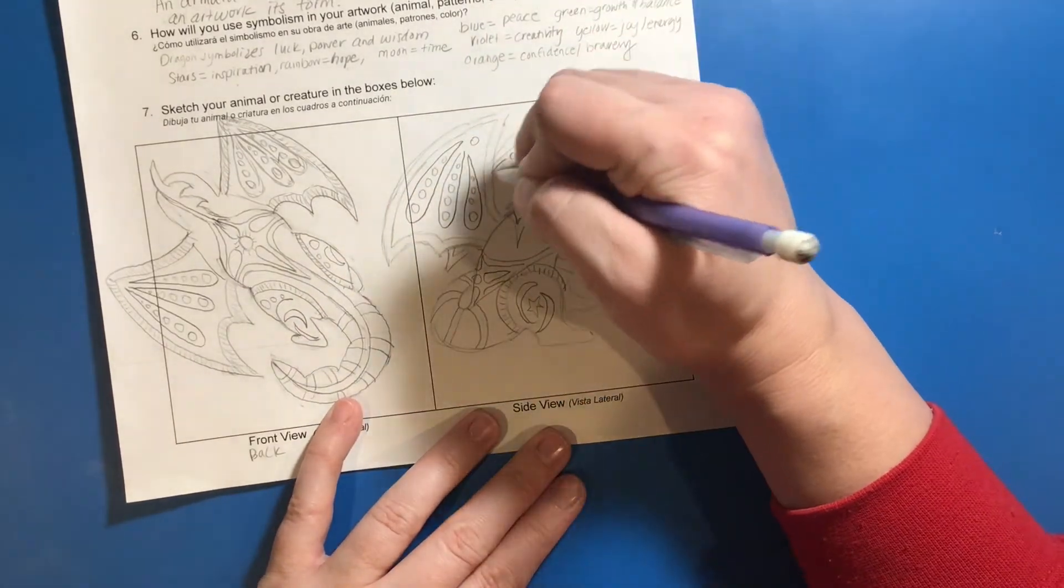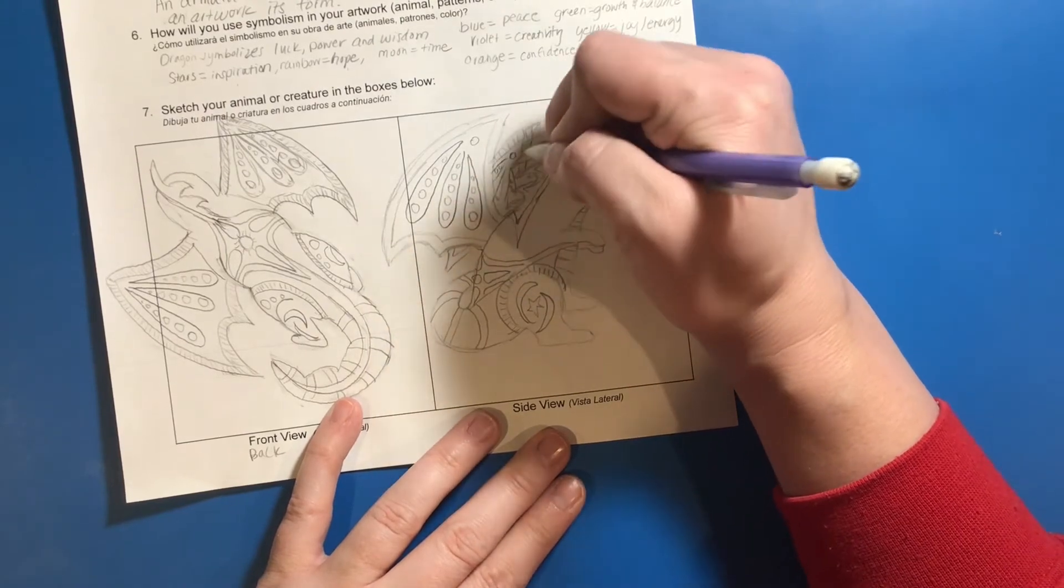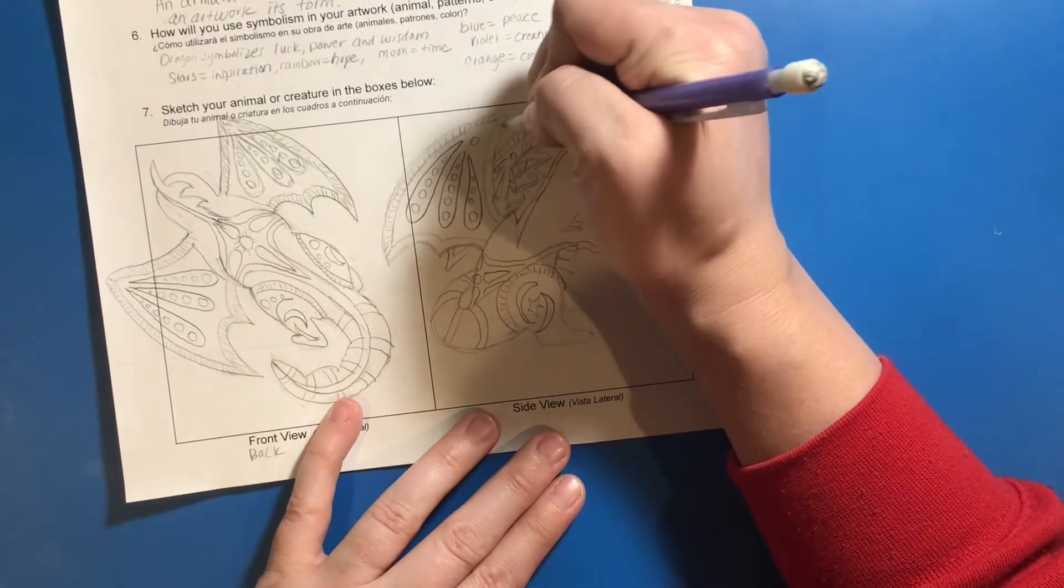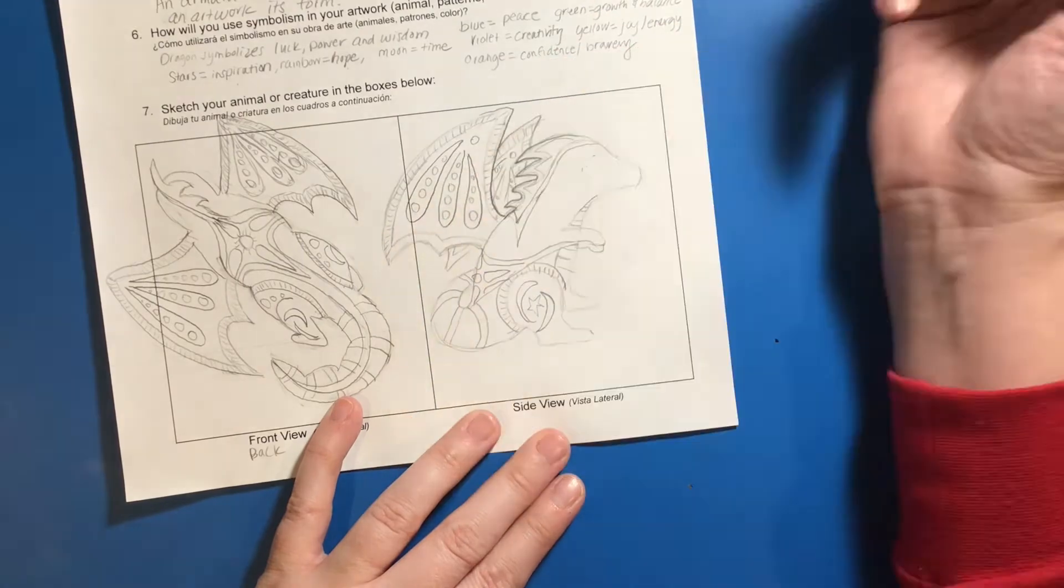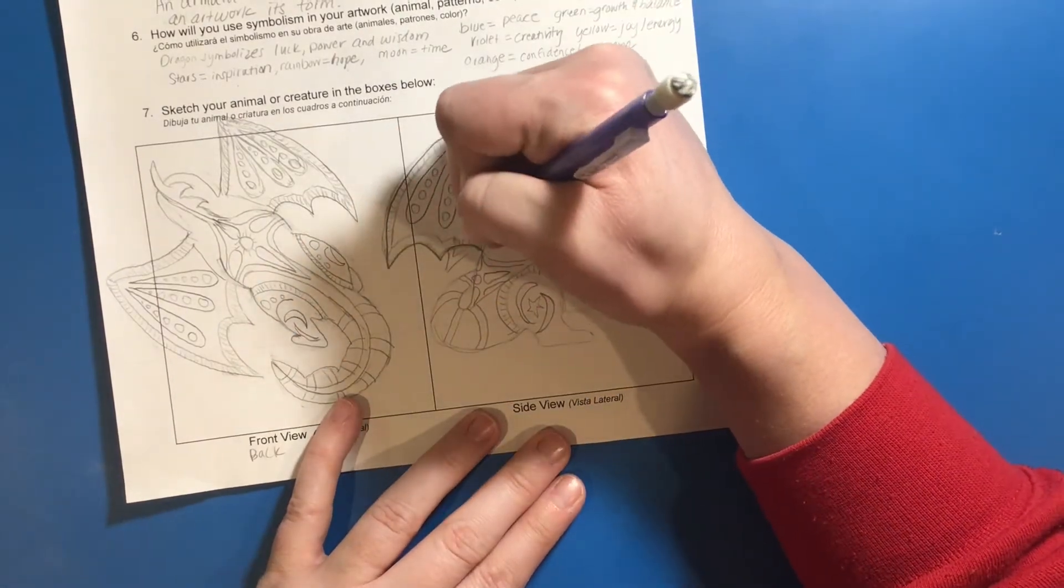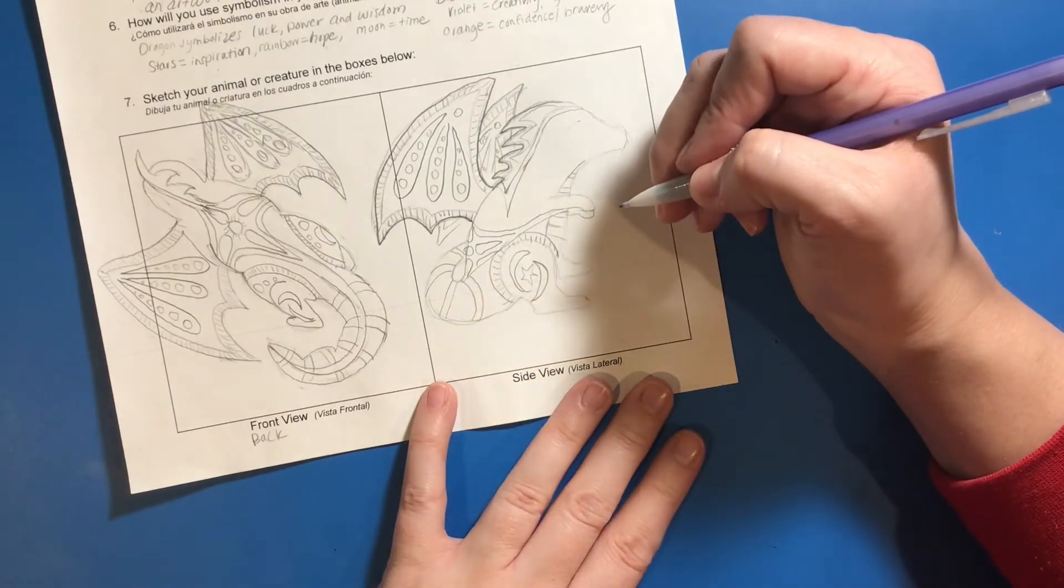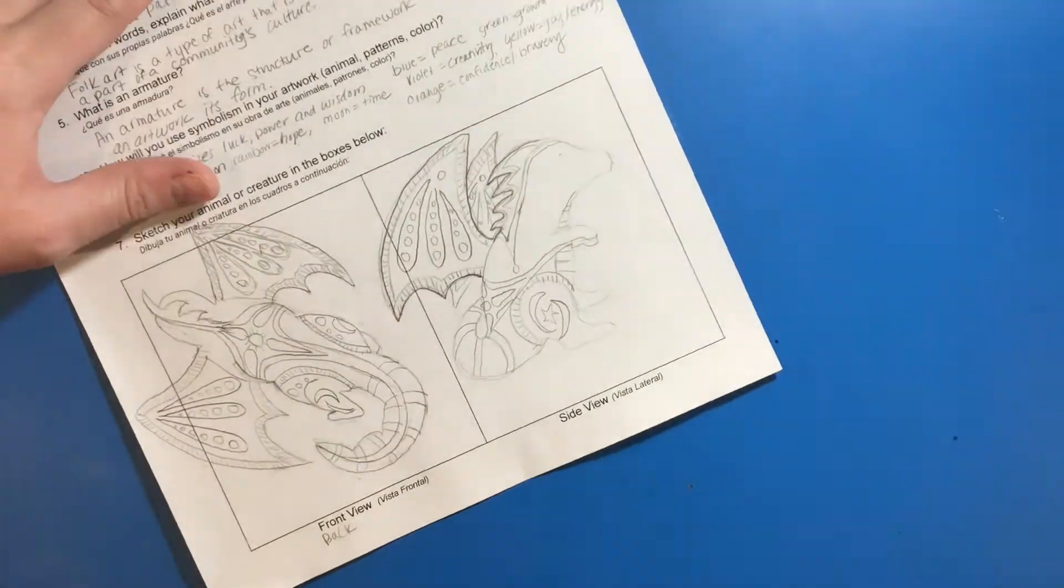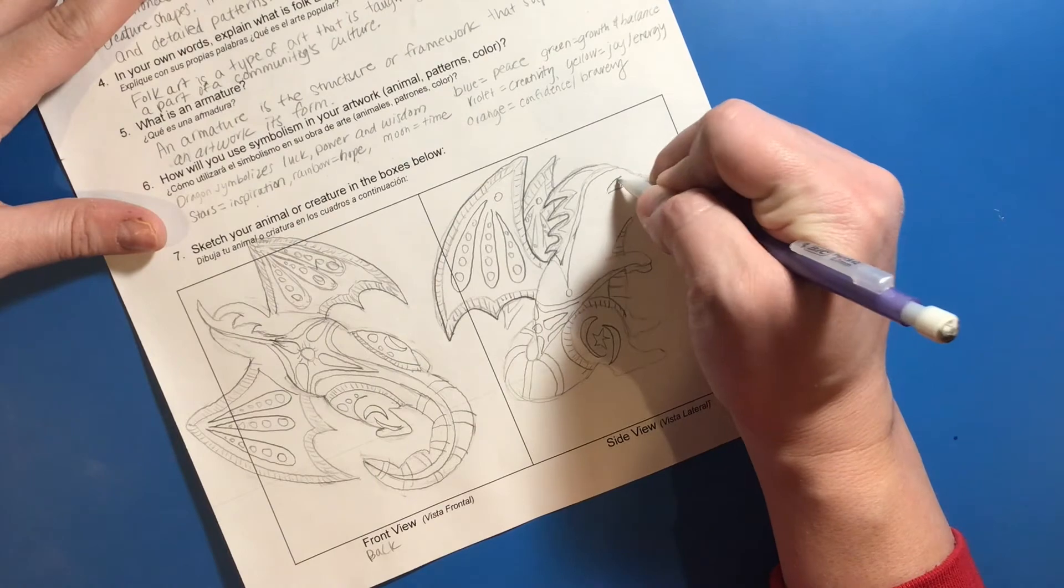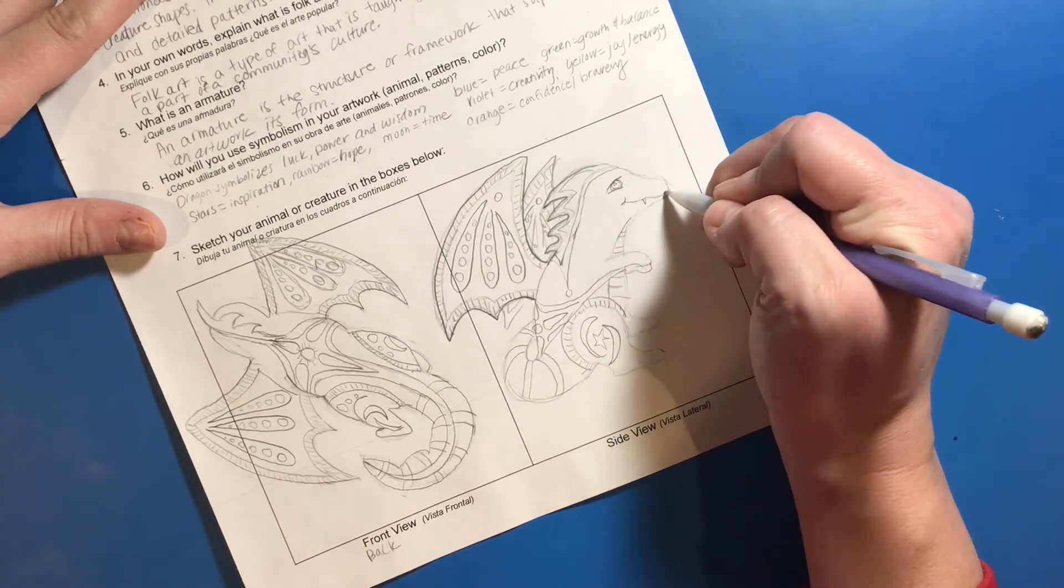As you start to design the face for your creature, it's important to think about what type of expression you want on your creature's face. Now for mine, I wanted it to be more of a friendly dragon than a fierce or mean looking dragon. So that's why I curved the mouth up. But I also wanted to include the teeth showing to show that it could be fierce.